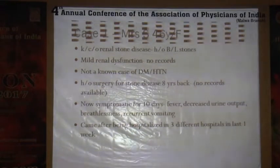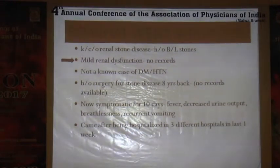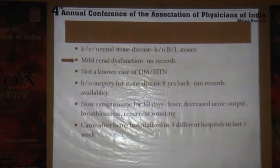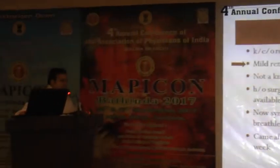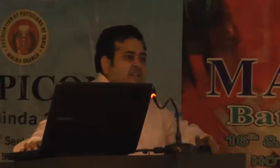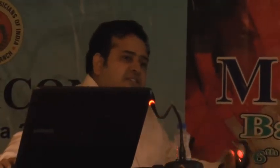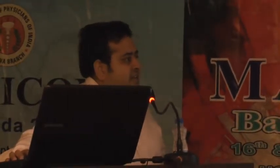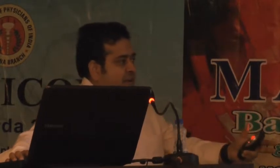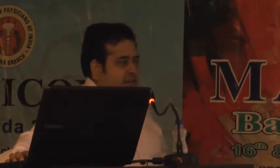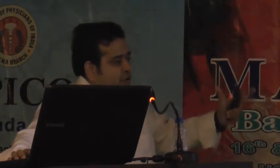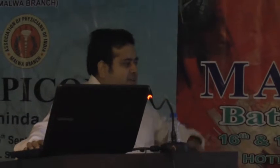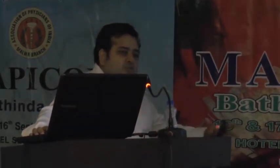Coming back to the lady — what went wrong? She had mild renal dysfunction but they neglected it. She did not follow up. Follow-up is required at least four times a year in CKD stage 5, and at least once a year even in lesser stages. Secondly, she had surgery for renal calculus disease but did not maintain records. Finally, she kept visiting separate hospitals, maybe because they were poor, losing precious time.